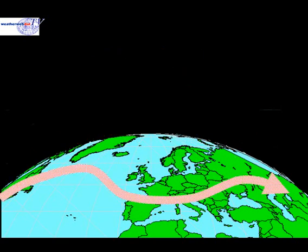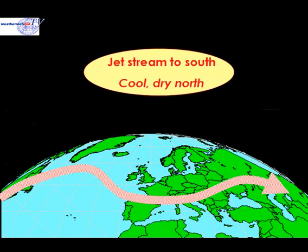With the jet stream to the south of the country, we are said to be on the cool side of the jet. In these circumstances, conditions are generally cool and dry. The best of the sunshine is through northern parts of the country, but over southern parts of England and Ireland there may be more cloud and outbreaks of rain. This unsettled weather will extend through France and also through parts of Spain and Portugal, running through Italy and much of central Europe.